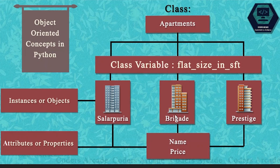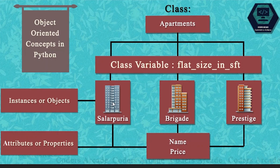Here you can see a pictorial diagram of the object-oriented programming concepts in Python. On top we have the class. A class is a main entity which has many instances or objects that can be assigned to it or instantiated and created inside it. The name of this class is 'apartments', and this apartments class will have many objects or instances. I have taken three examples: Salarpuria, Brigade, and Prestige. These three are the types of apartments.